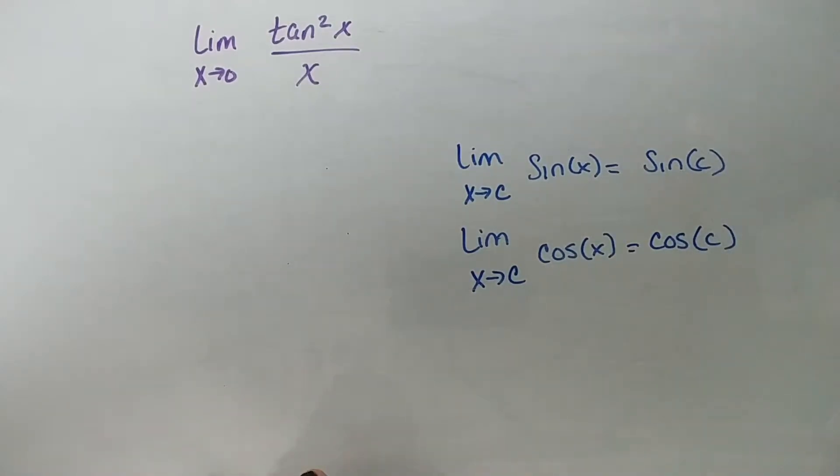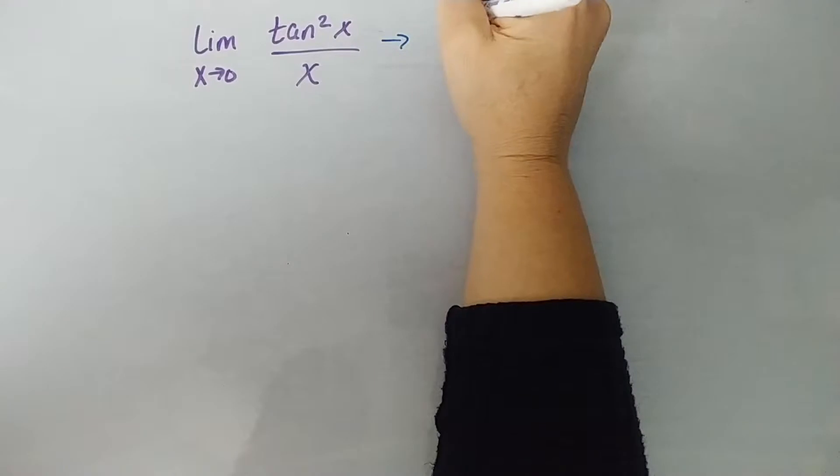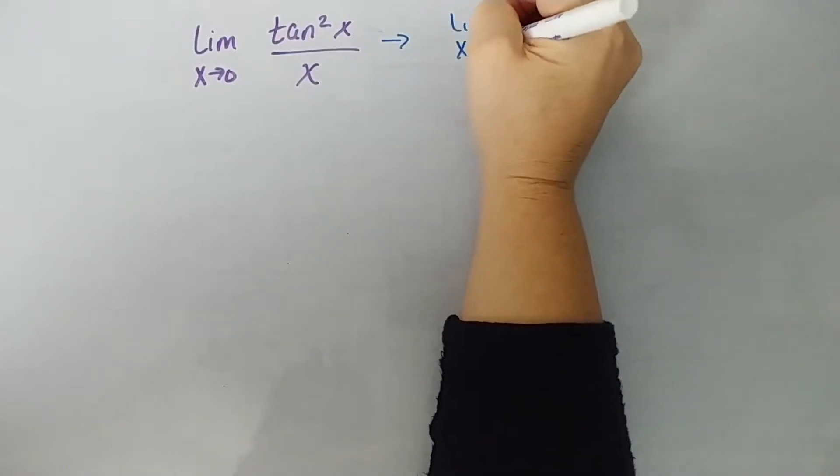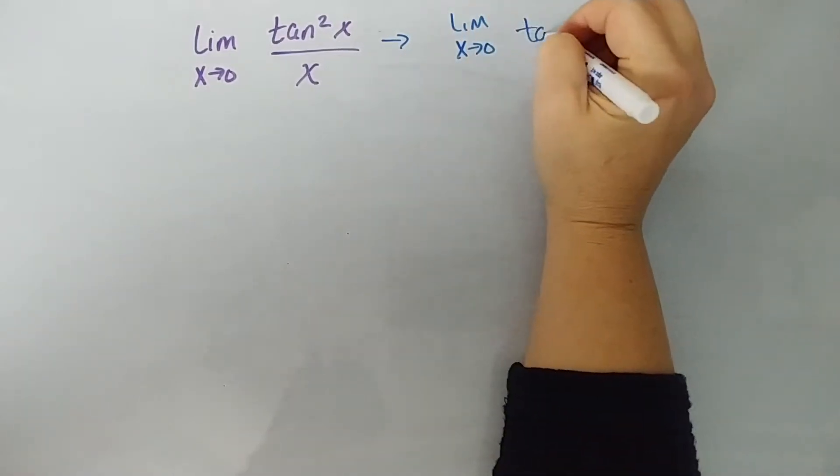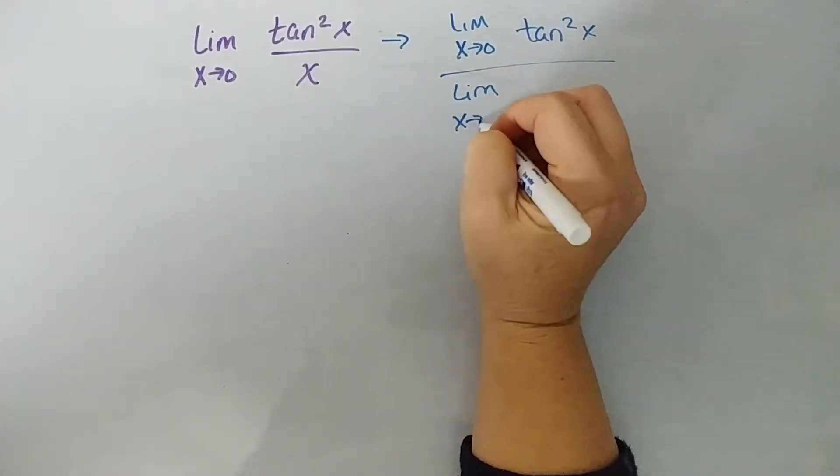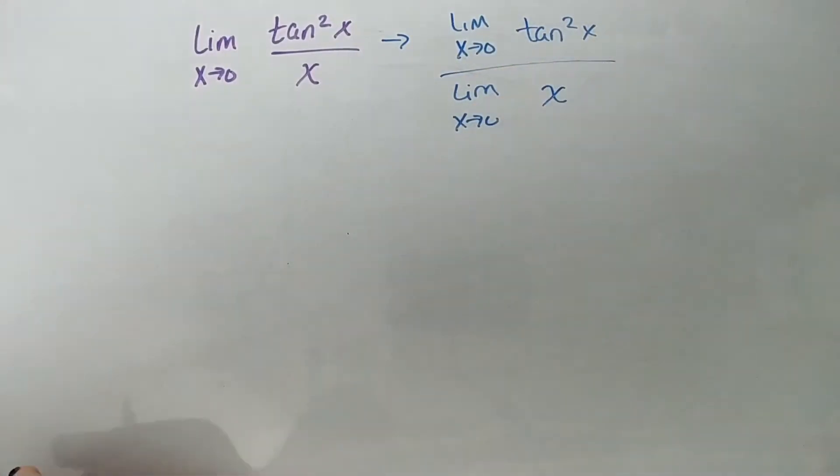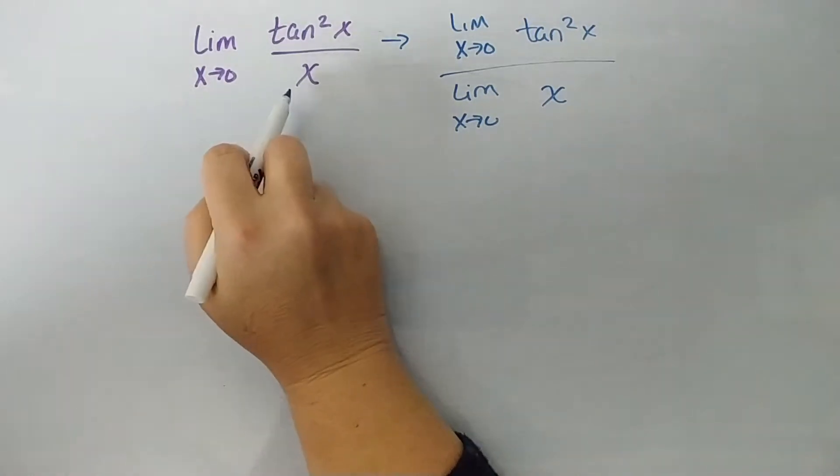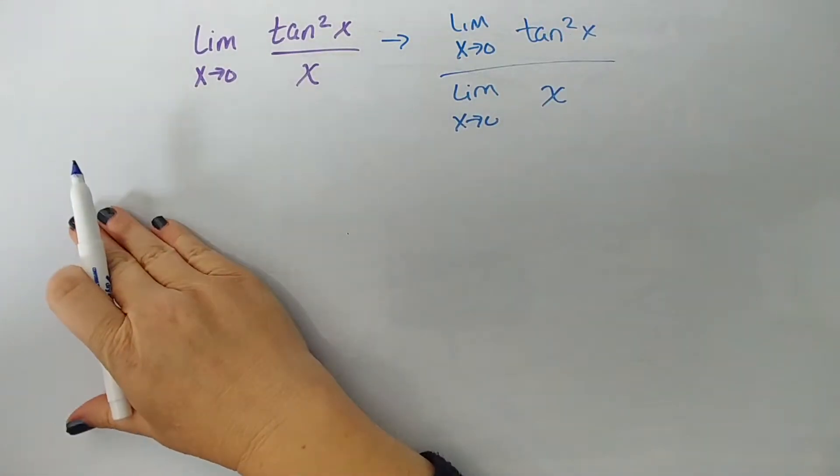But in this case, and in most cases when they're asking for the limit, something weird is happening. So let's look at this, okay? So this is generally the limit as x approaches 0 of tangent squared of x all over that limit as x approaches 0 of x. So the first problem we see is that we're going to have a 0 in the denominator. That's definitely a no-no.